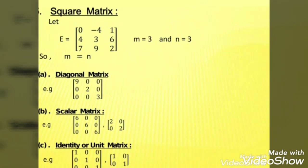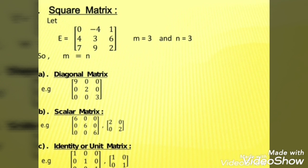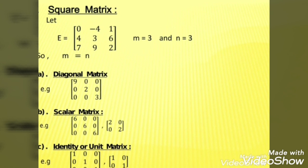The next type is scalar matrix. Scalar matrix is also a diagonal matrix, but with its own condition: the principal diagonal elements should all be equal to each other, while all non-principal diagonal elements are zero. Unlike the diagonal matrix, in scalar matrix the principal diagonal elements must not be zero or one — you can take any non-zero element, but all principal diagonal elements must be the same.